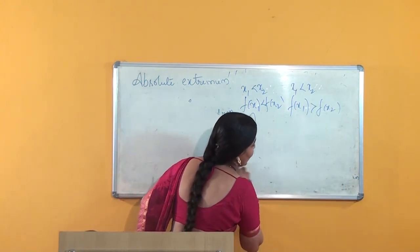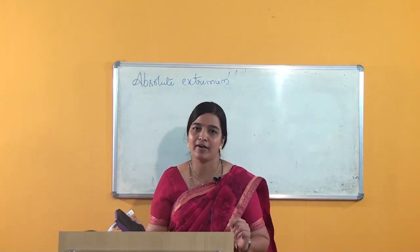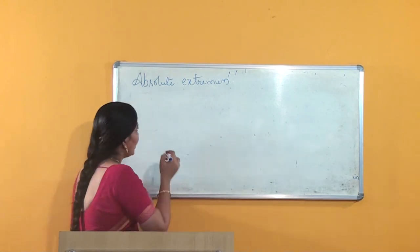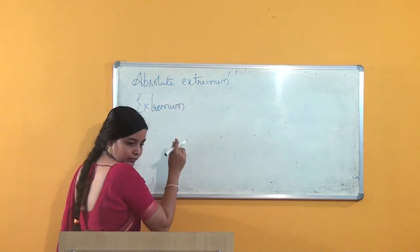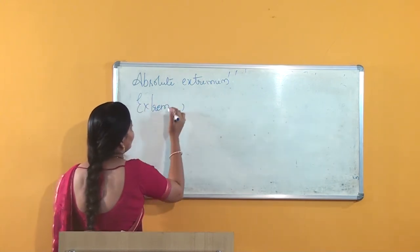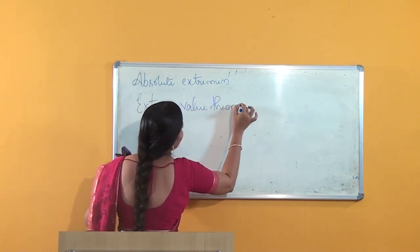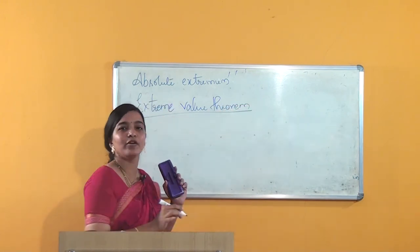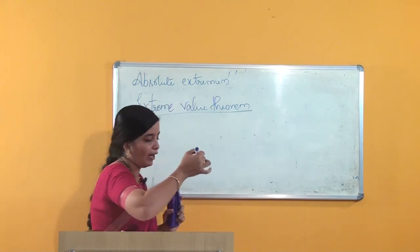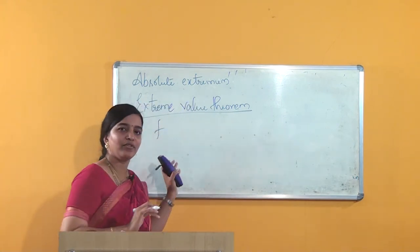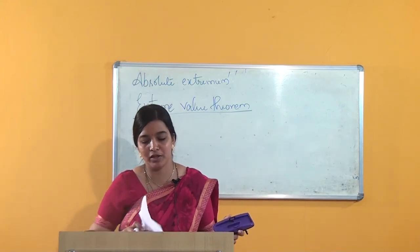If the graph has an absolute maximum or absolute minimum value, then we say that it has the absolute extremum value. Here comes one more theorem — the Extreme Value Theorem. What does the Extreme Value Theorem say? It says that if the function is continuous, then it will have an absolute maximum value as well as an absolute minimum value.